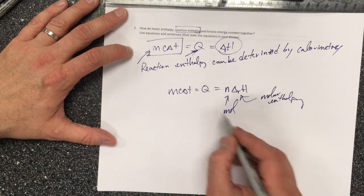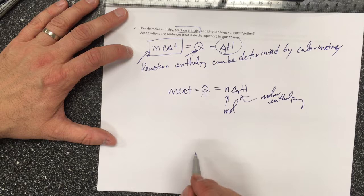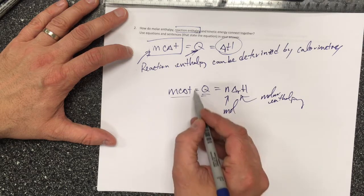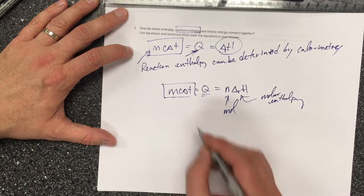When I multiply those two things, I get the enthalpy change that causes the calorimeter temperature to change.